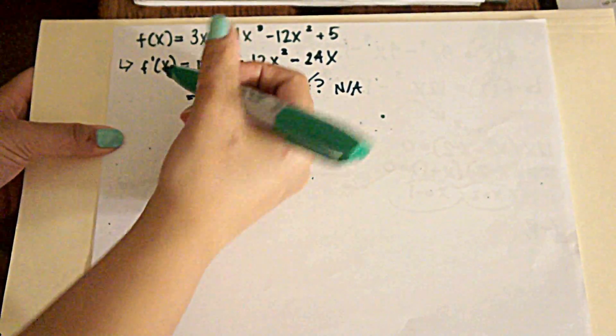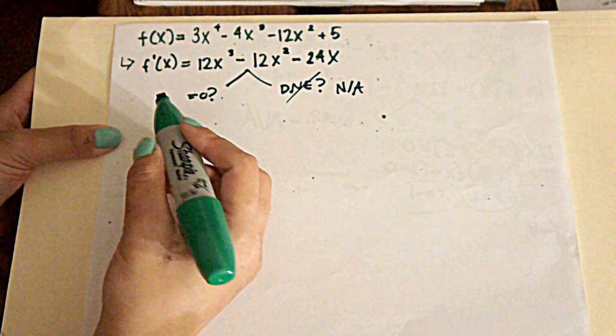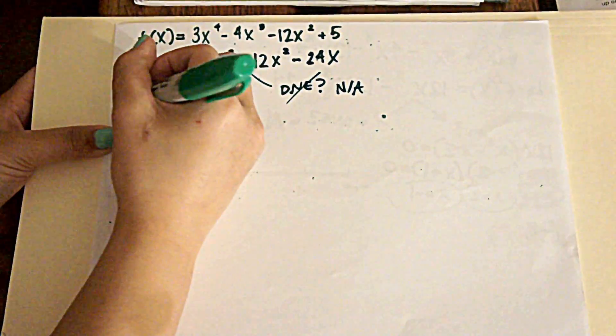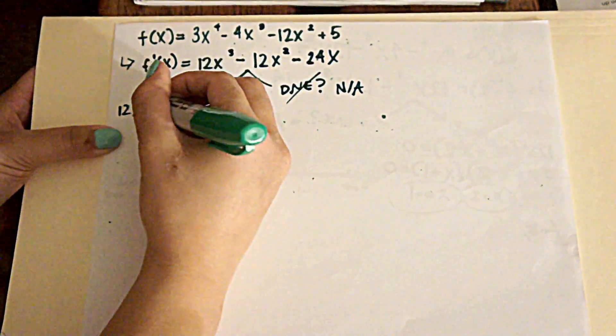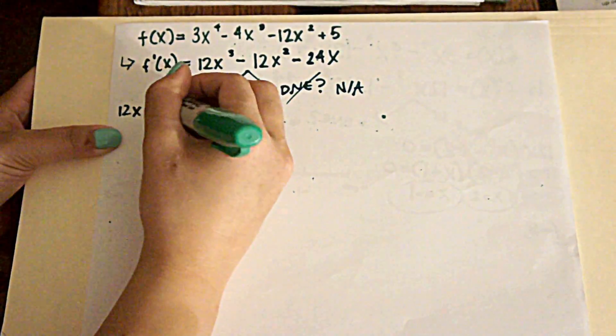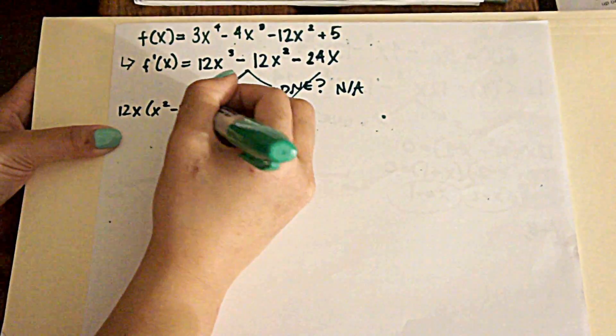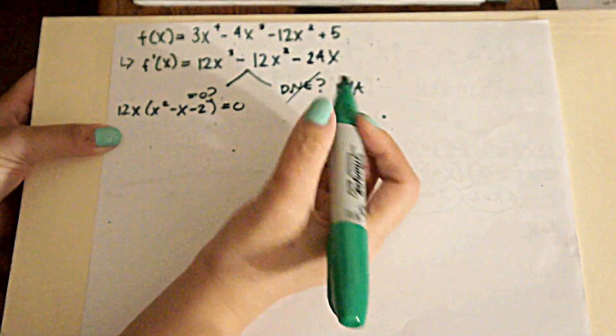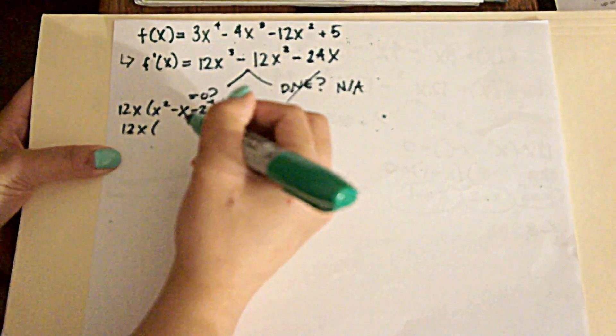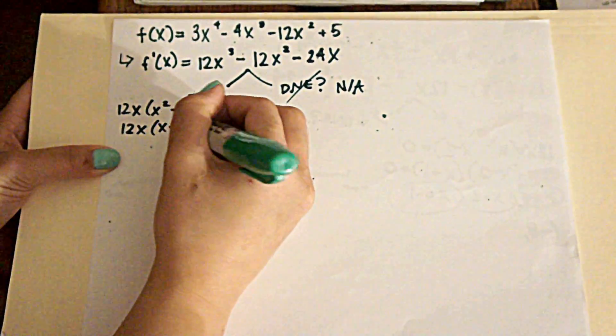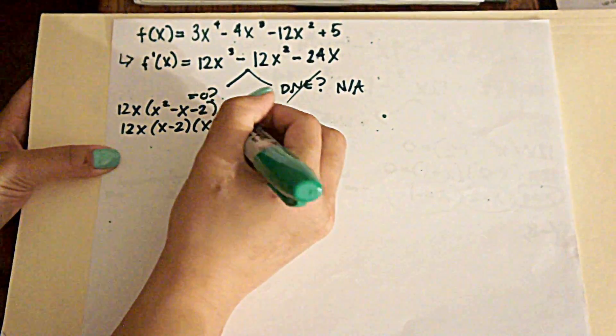The first thing we want to do when we set it equal to 0 is start to simplify. We can go with 12x, take a 12x out of this, and that will leave us with x squared minus x minus 2 equals 0. And we can further factor, giving us x minus 2 and x plus 1.